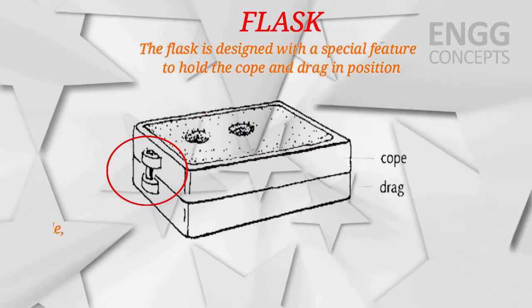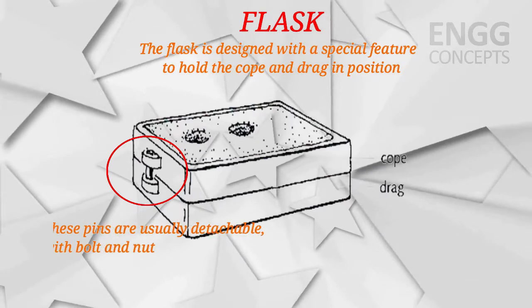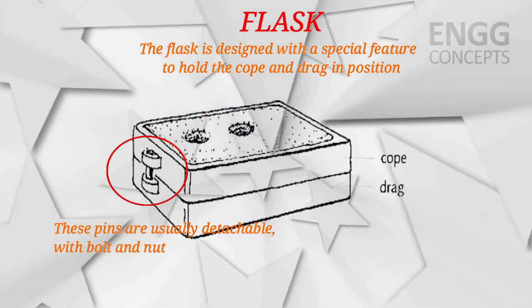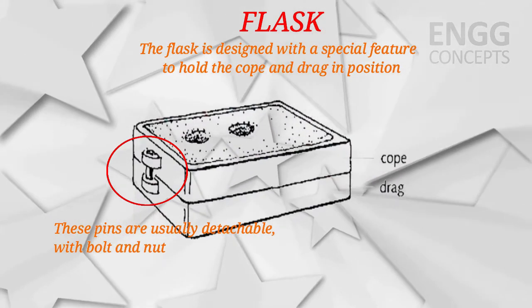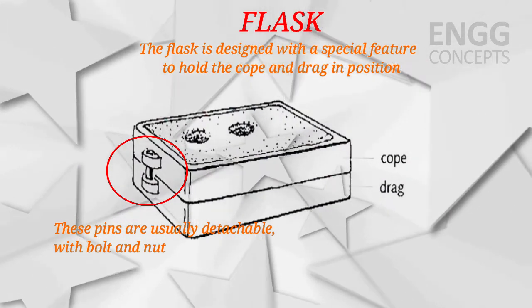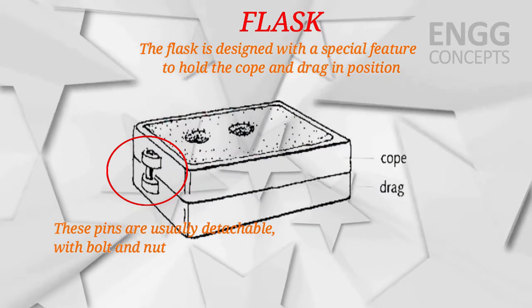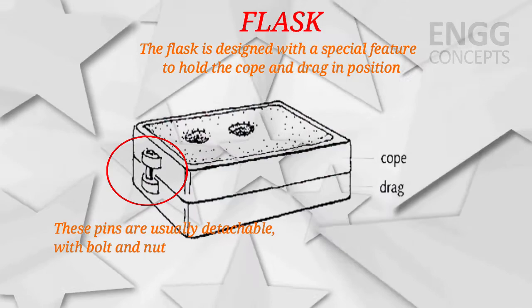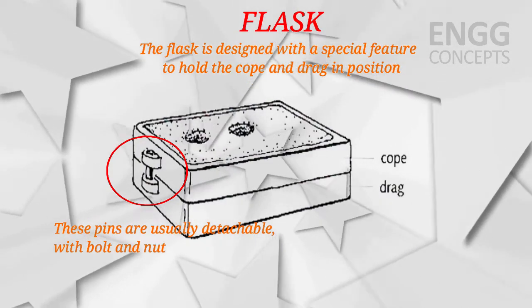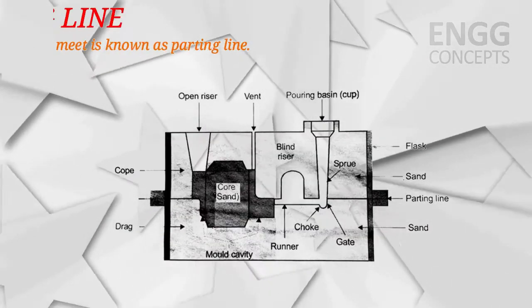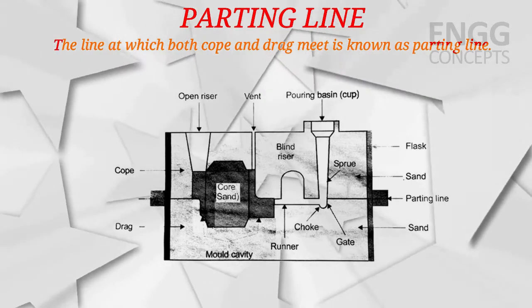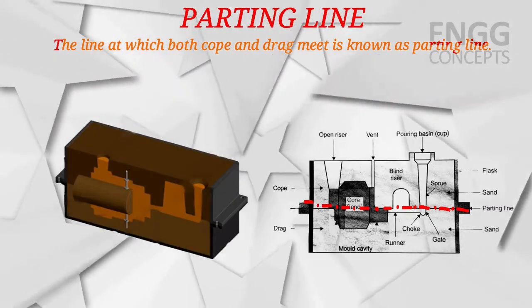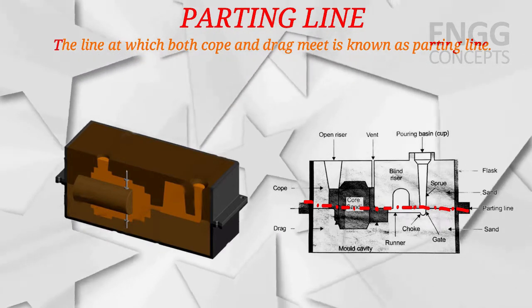Lock pins are used to hold the cope and drag in position. These pins are usually detachable with bolt and nut. They help align the cope and drag and hold them together, also avoiding pressure due to pouring of molten metal into the mold cavity or pressure due to thermal expansion of the molten metal. When the cope and drag are combined, the line at which both meet is known as the parting line.